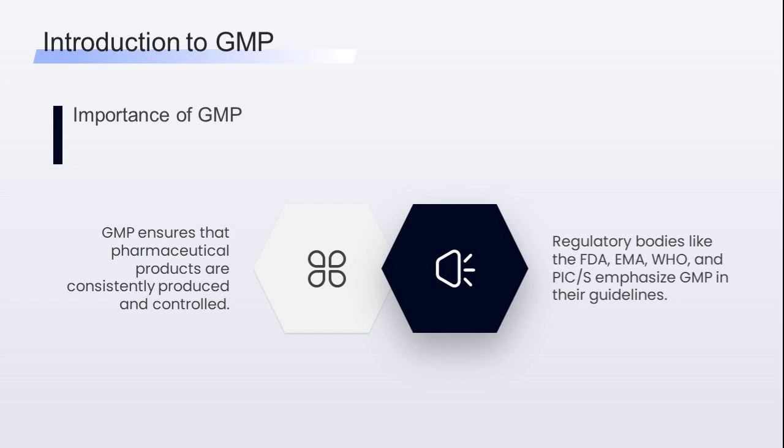Validation proves that the manufacturing process does what it's supposed to, again and again, giving consistent quality. Regulatory bodies like the FDA, EMA, WHO, and PICS emphasize both in their guidelines, like EU GMP Annex 15, FDA's process validation guidance, and WHO's validation guidelines.